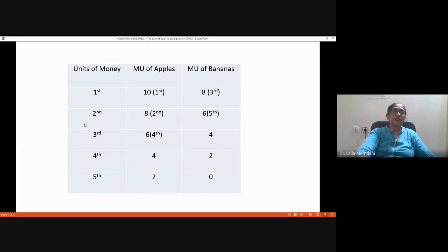The third rupee, of course, he will go for banana. Then the fourth, again for apple. Let us assume our consumer is fond of apples and loves apples, so he spends the fourth rupee again on apple. Since he has five rupees, he will spend the fifth rupee also because he spends the entire budget. He will buy three apples and two bananas, and the marginal utility upon price is equal: 6 equals 6.